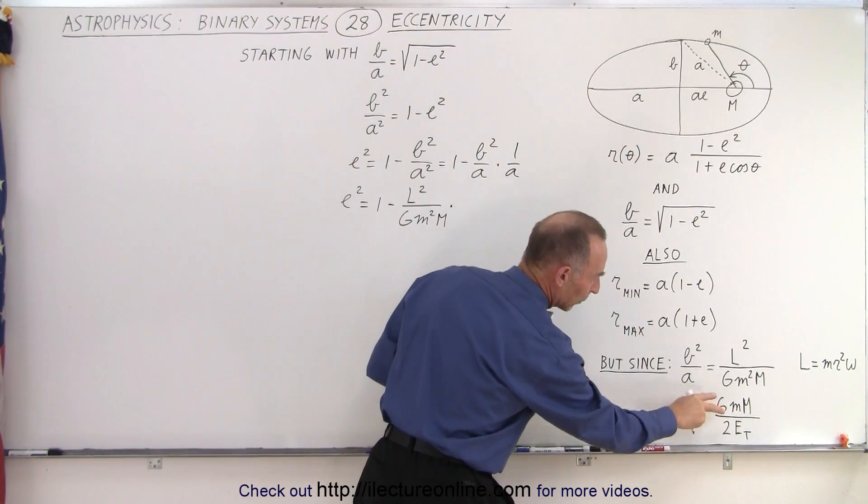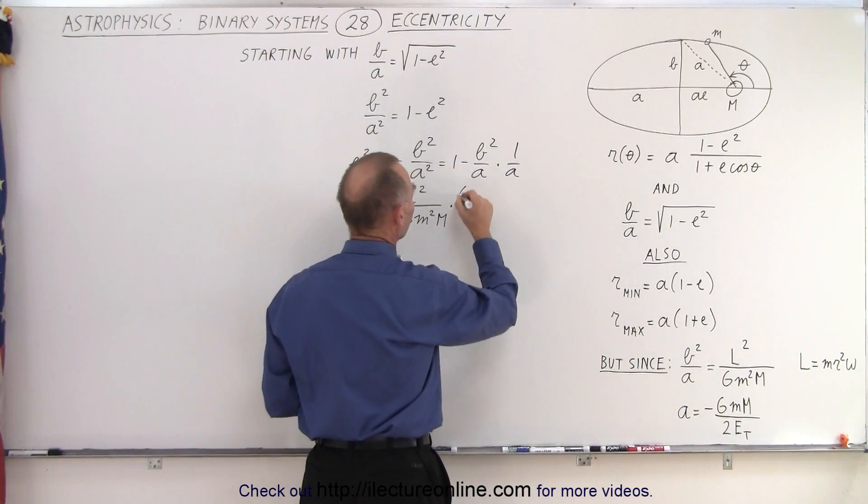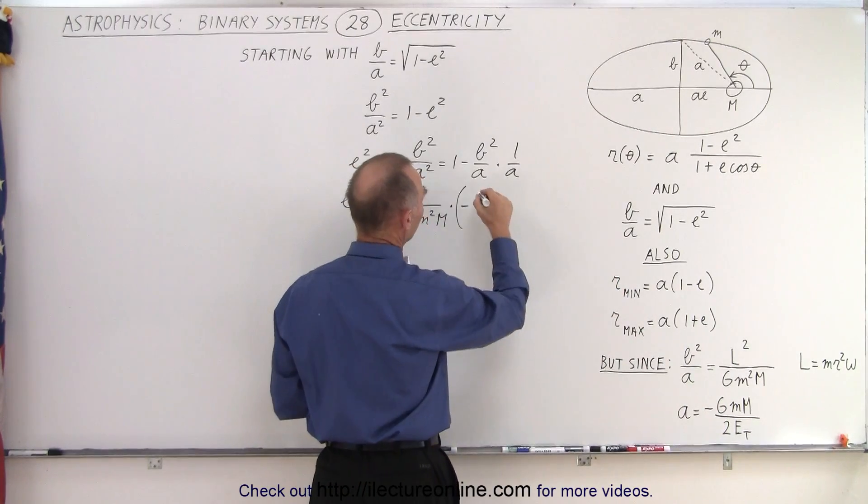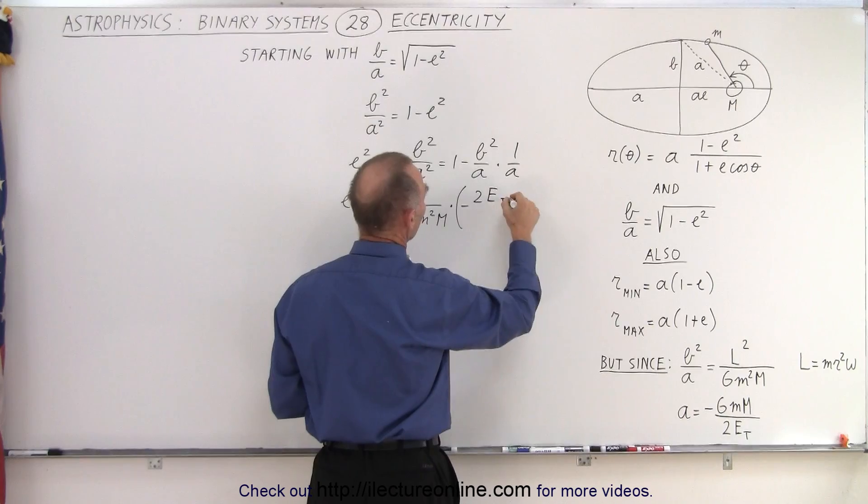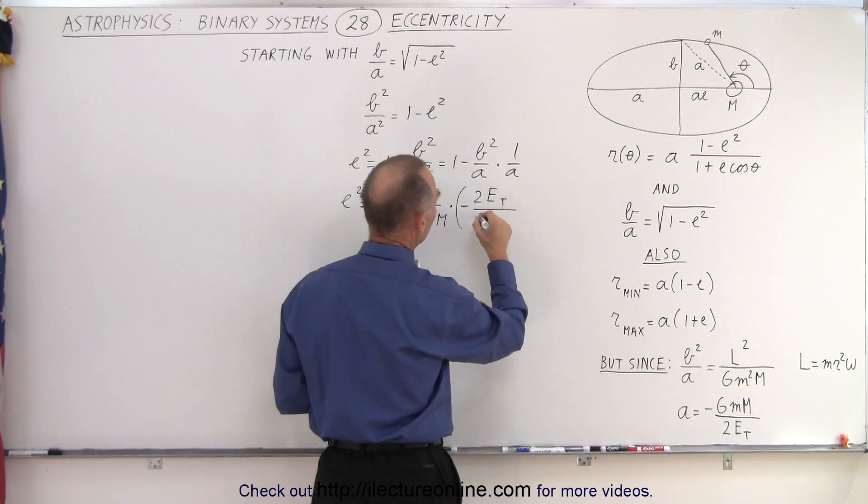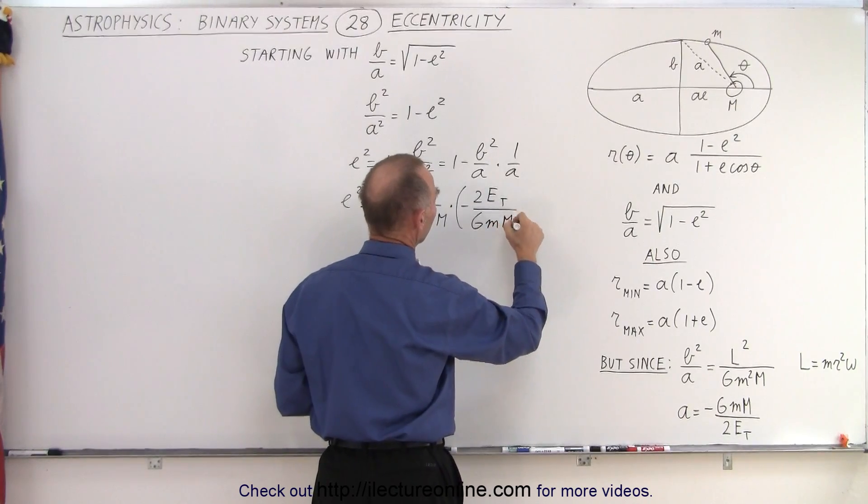Now, of course, A is equal to this, so 1 over A will be the inverse of that. So we need a minus sign. We have twice the total energy divided by G m big M.